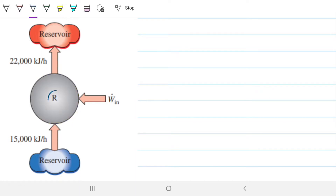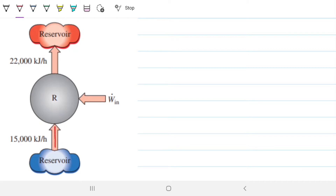R stands for refrigerator. And as you know, the point of it is to take heat away from an environment that is already cold. We know that does not happen spontaneously — heat wants to go from hot to cold, from where it's hot to where it's cold. But if we want to make it go in the opposite direction, then we need to supply some energy to a machine that will do the pumping of the heat in the opposite direction that it would naturally want to go.